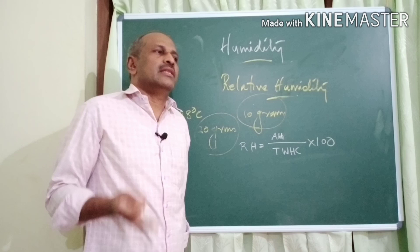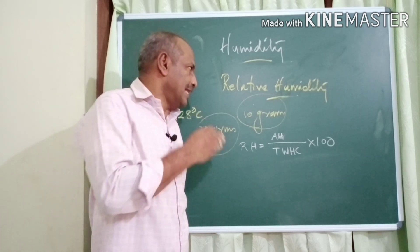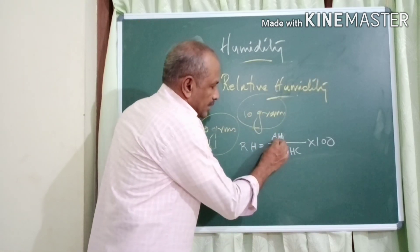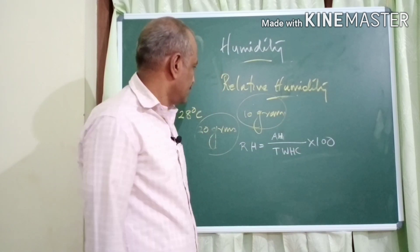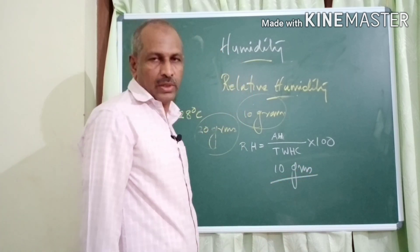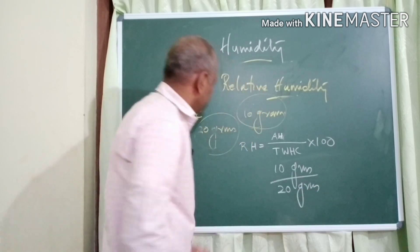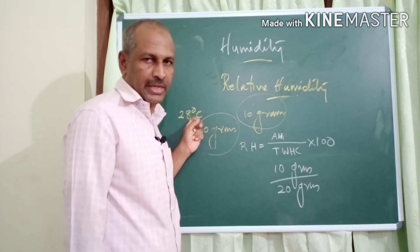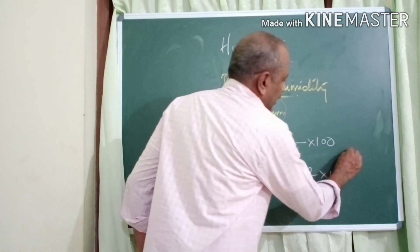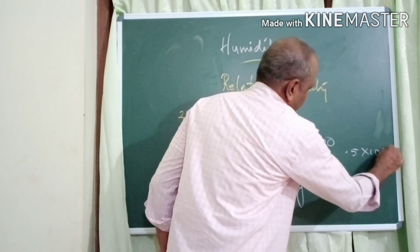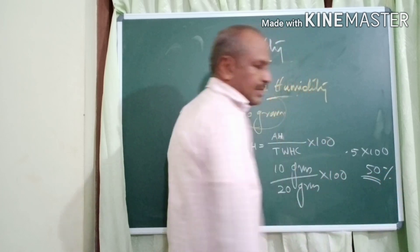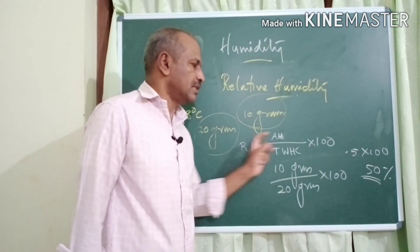Using that formula, we can find out relative humidity and express it in percentage. Absolute humidity is 10 grams divided by total water holding capacity of 20 grams at 28 degrees Celsius, multiplied by 100. That gives 10 ÷ 20 = 0.5, and 0.5 × 100 = 50. Since relative humidity is expressed in percentage, the relative humidity here is 50%.